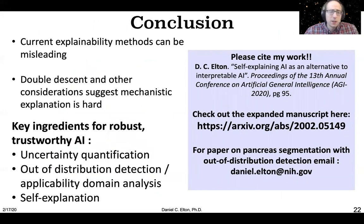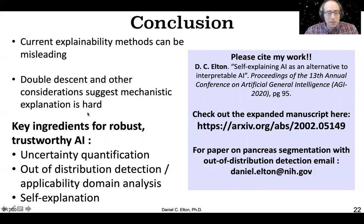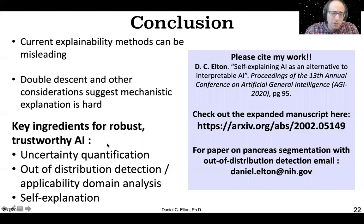In conclusion, a lot of explainability techniques right now are going to be very misleading — there are many pitfalls and a lot of people just telling stories about visualizations, which is not very scientific. Double descent suggests this is going to be a very hard problem, because you have to go back to the training data and look at how it's doing that interpolation. A more practical approach to engendering trust in these systems is a combination of uncertainty quantification, out-of-distribution detection, and self-explanation. Please cite my work and check out my expanded manuscripts. Thank you.